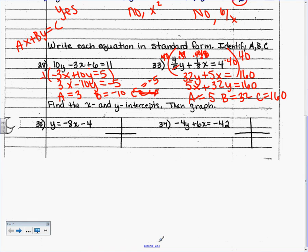Find the x- and y-intercepts, then graph the equation. To find x, set y = 0 and substitute. Add 4 to both sides, then divide by negative 8, and x equals negative one half. In Algebra 2, answers aren't always pretty integers — negative one half is correct, you did nothing wrong.